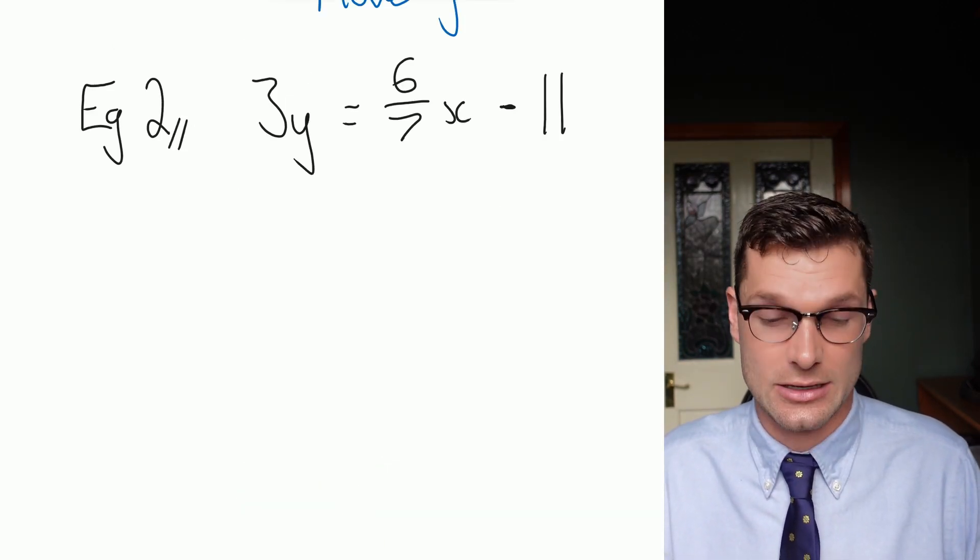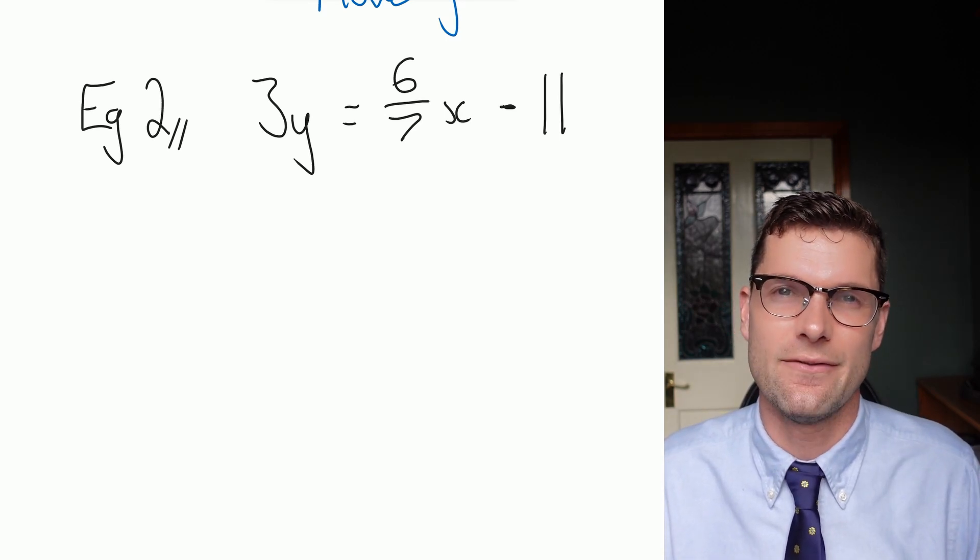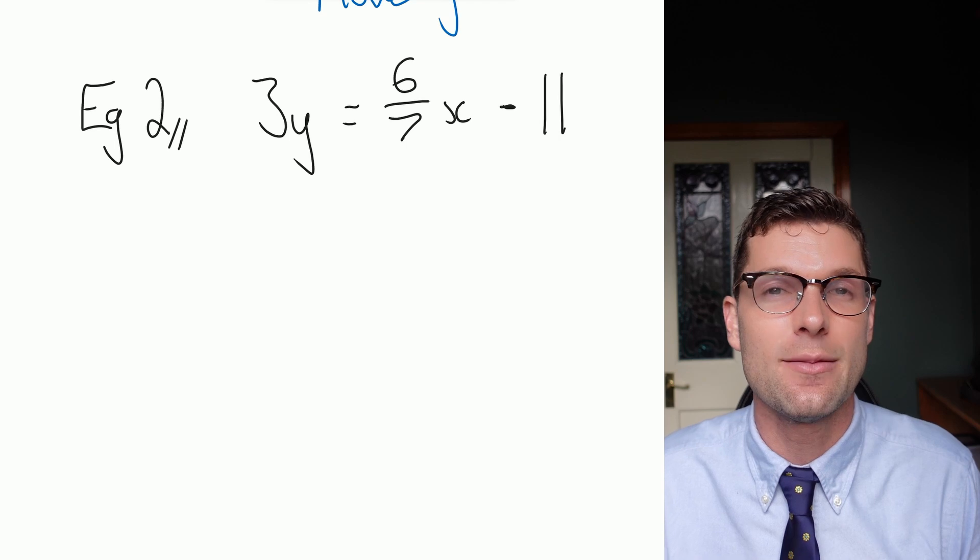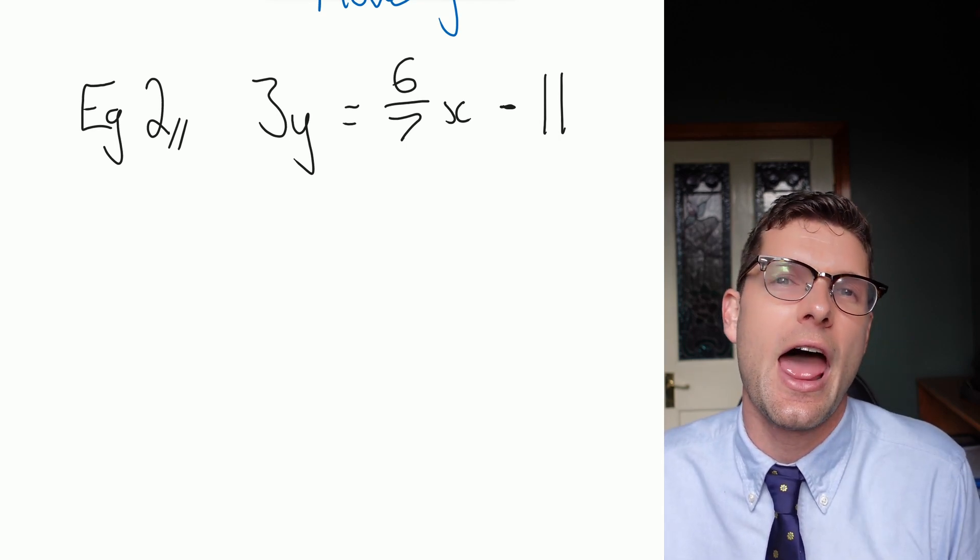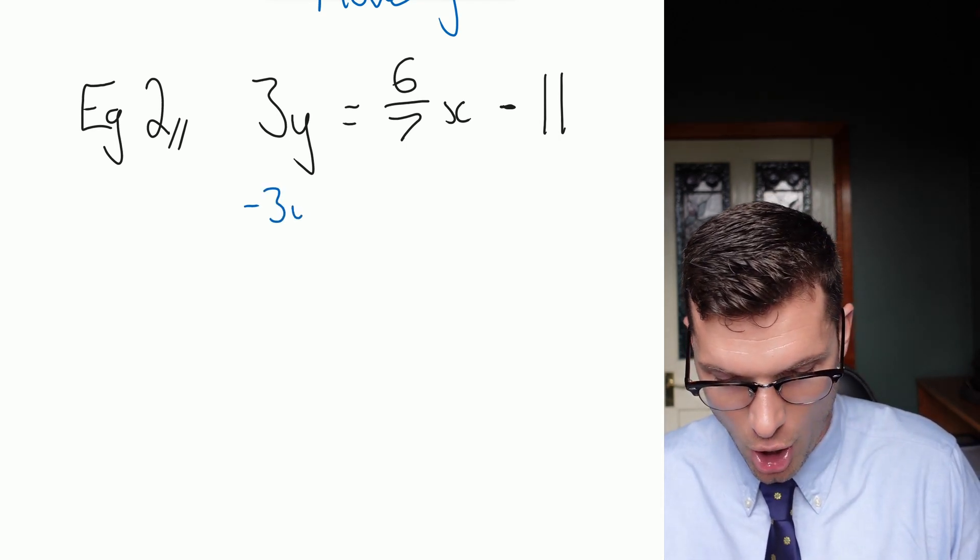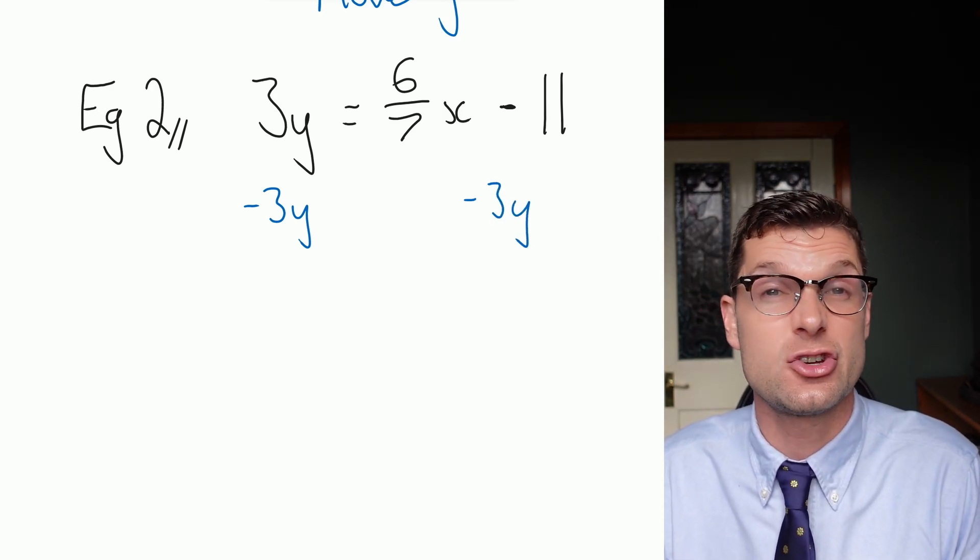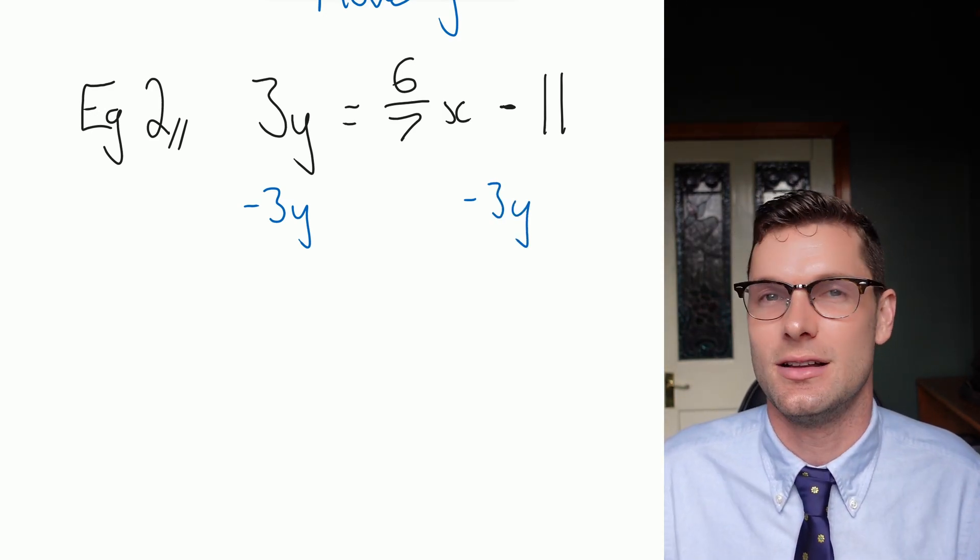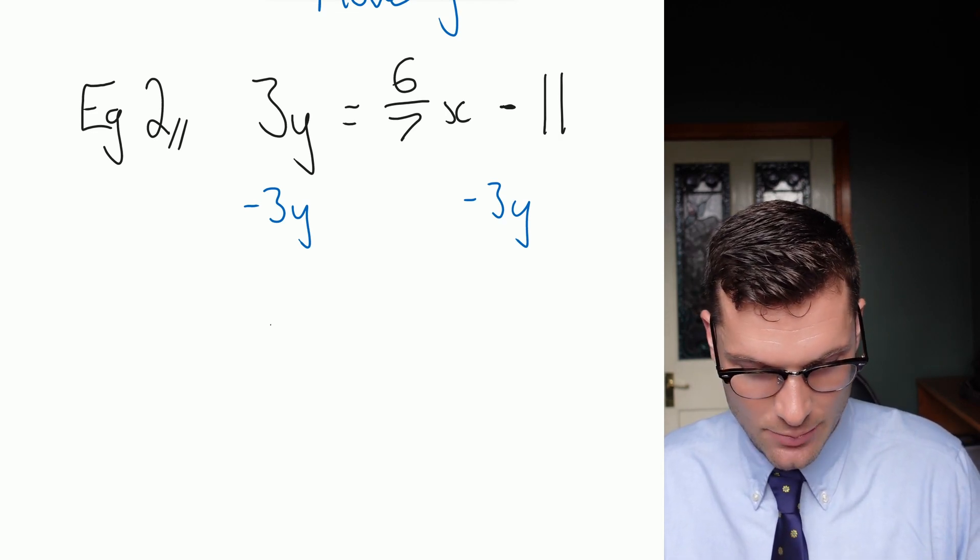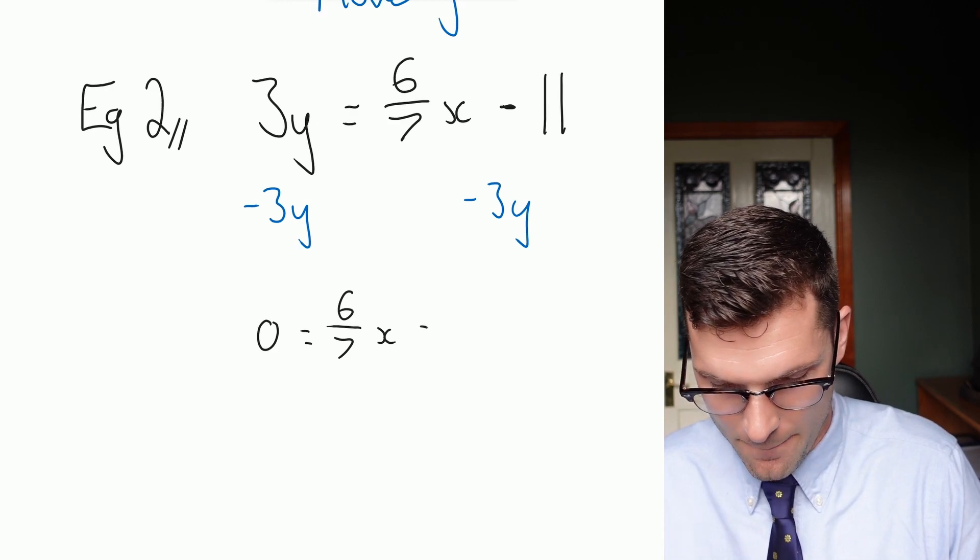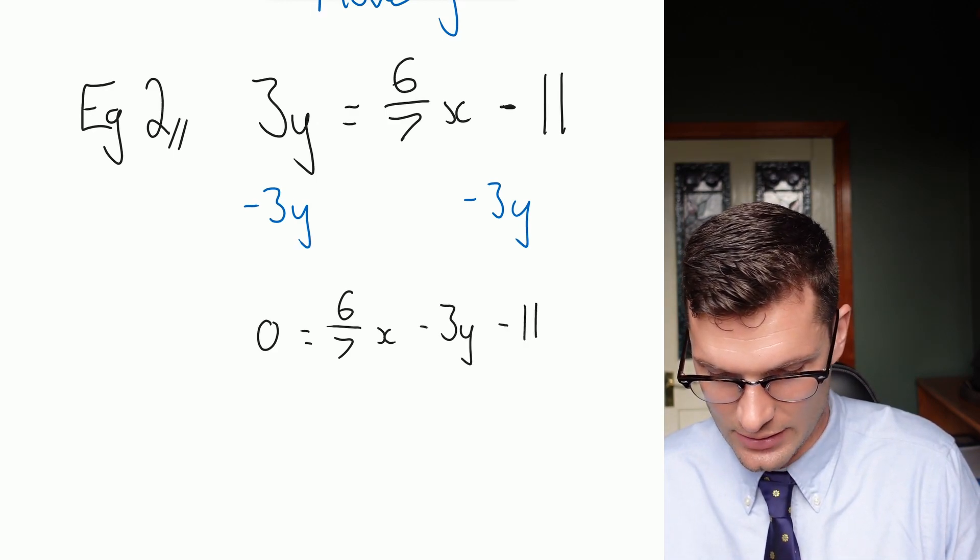So for this one, I've got 3y = 6/7x - 11. This time, I'm going to keep my x term the exact same. I'm going to leave it on that right hand side. And I've got a -3y over to the other side. Again, I'm going to try and put my y straight into the middle, just so it reads a little bit easier. This means I'm left with 0 = 6/7x - 3y - 11.